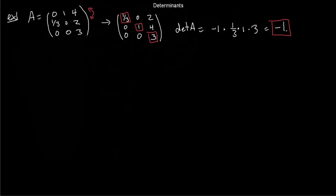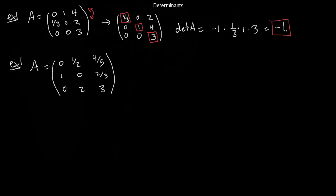Let's see another example — a matrix with fractions: row 1 is 0, 1/2, 4/5; row 2 is 1, 0, 2/3; row 3 is 0, 2, 3. Rather than work with fractions, multiply row 1 by 10 (the LCM of 2 and 5) and multiply row 2 by 3. This gives integer entries: 0, 5, 8; 3, 0, 2; 0, 2, 3. Then swap rows 1 and 2, picking up a minus 1 on the determinant, to get: 3, 0, 2; 0, 5, 8; 0, 2, 3.